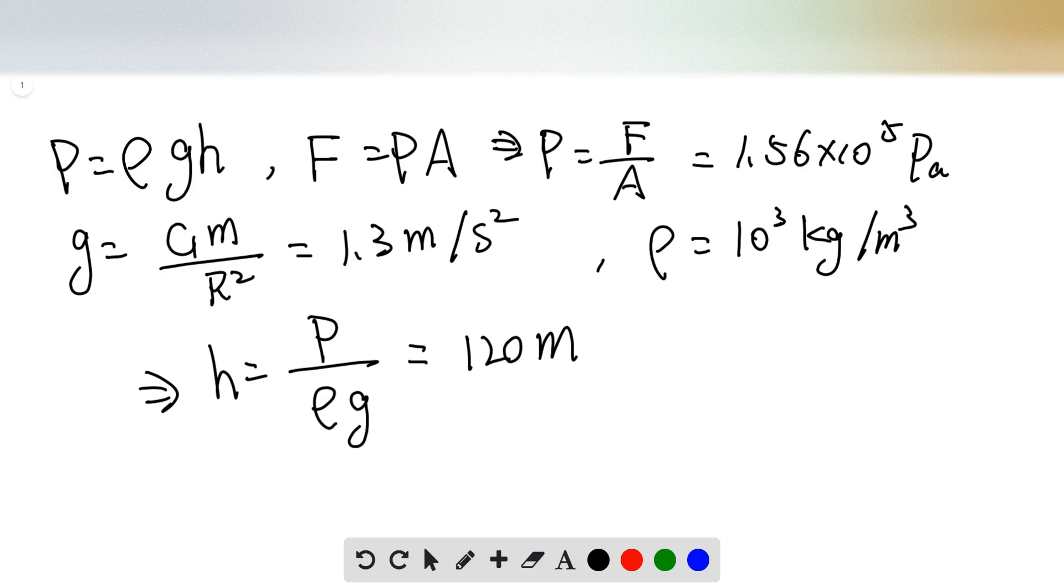So the pressure applied on its window can be calculated by pressure P equals density of the liquid, which is about 10 to the third kilograms per meter cubed, times gravitational acceleration g, times the depth.